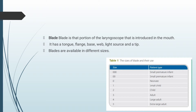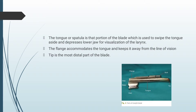The blade is the portion of the laryngoscope that is introduced into the mouth. It has a tongue, a flange, a base, a web, a light source, and the tip. Blades are available in different sizes, starting from triple zero used for a small premature infant through size 5 used for extra-large adults. The tongue or spatula swipes the tongue aside and depresses the lower jaw for visualization of the larynx. The flange keeps the tongue away from the line of vision, and the tip is the distal-most part of the blade.